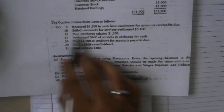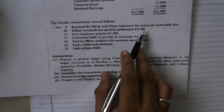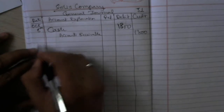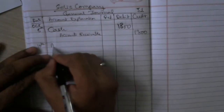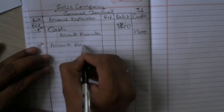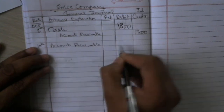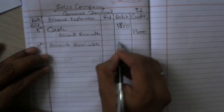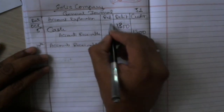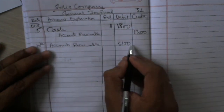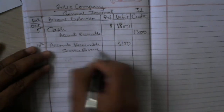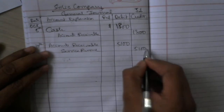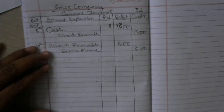October 10th — billed customers for services performed, $5,100. When billing customers, accounts receivable is debited by $5,100, and service revenue is credited by $5,100, because this is service revenue being earned.